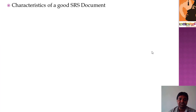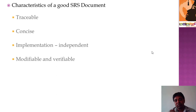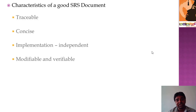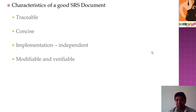Talking about the characteristics of a good SRS document: it is traceable, meaning it can be traced at any point in time. It is concise so it can be understood by every person entering the project. It is implementation independent, making it usable for future projects as well. It is modifiable — changes can be made at any point in time — and it is also verifiable.